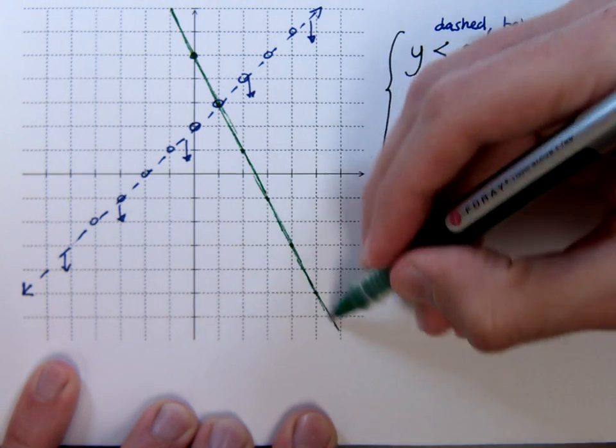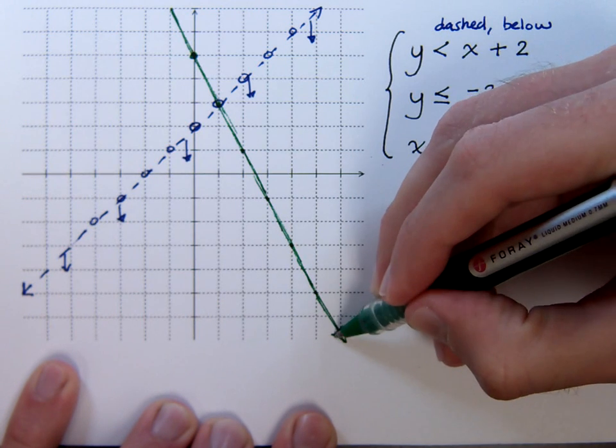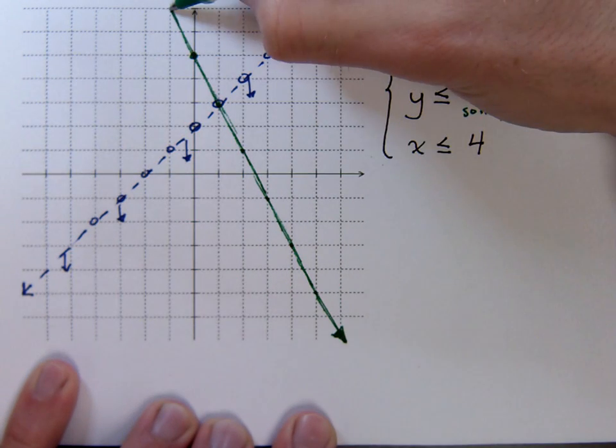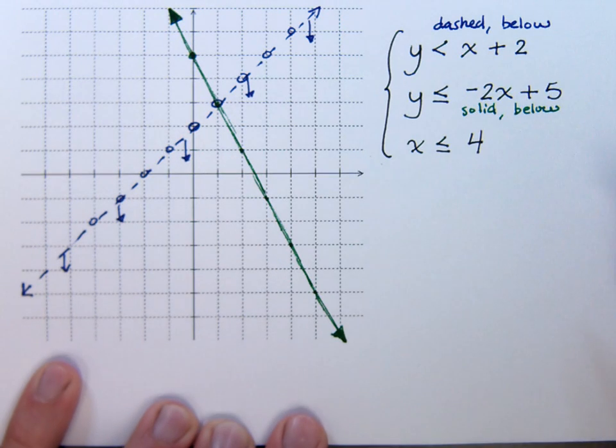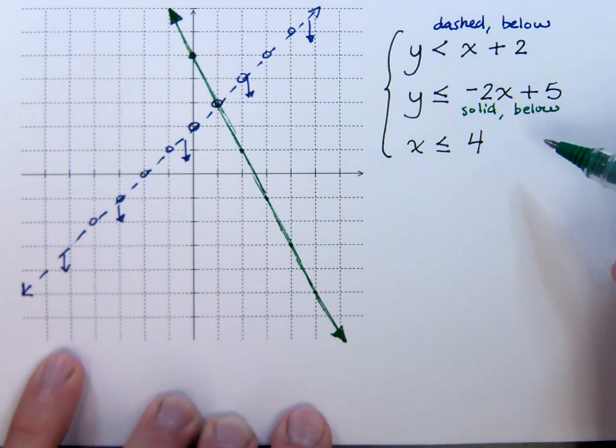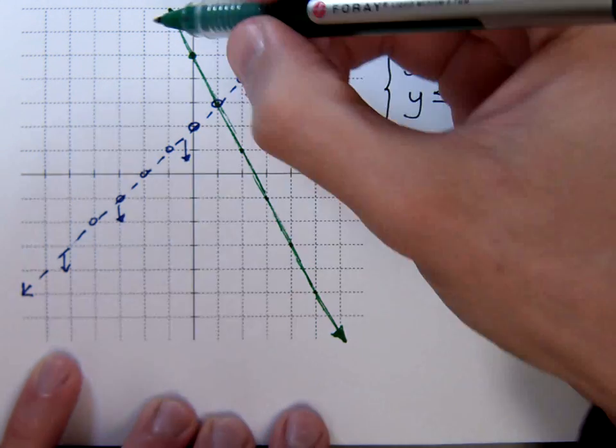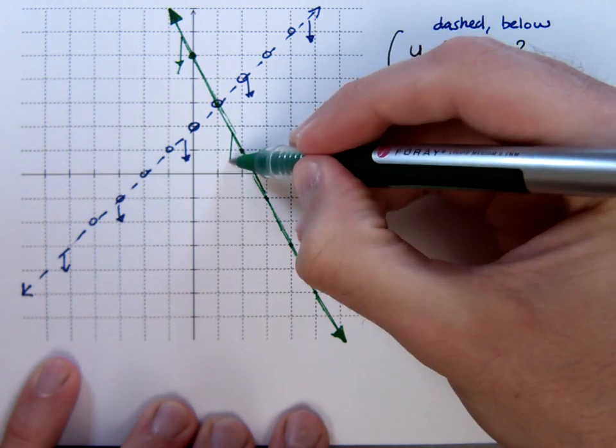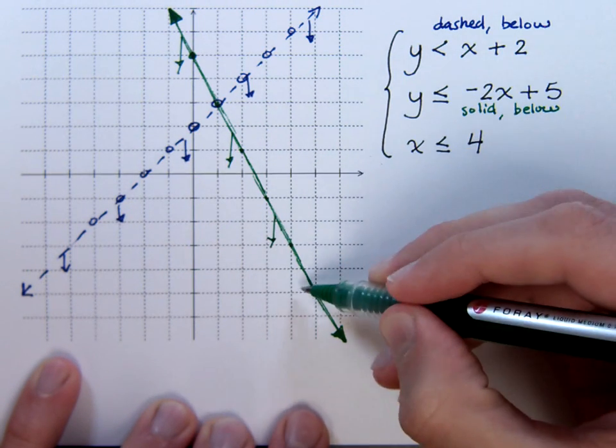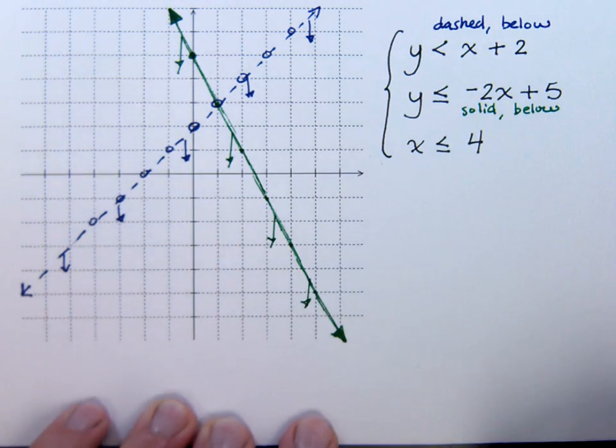So here are the points, and then here's my line. To graph these quickly and easily, we have to be very good at graphing using the slope and y-intercept. And if we are, then graphing these is really not that difficult. And so here I need to be shading below, just like that.